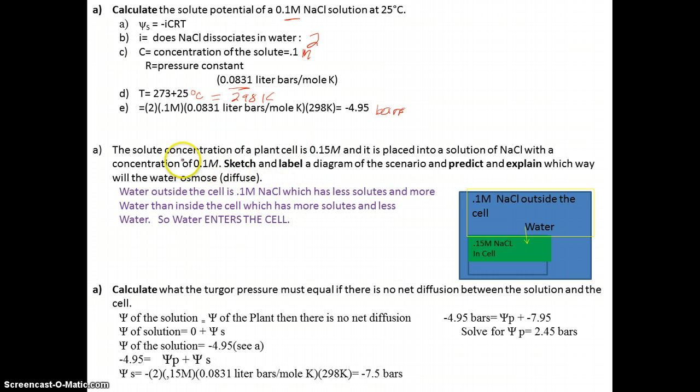The next problem asks: the solute concentration of a plant cell is 0.15, placed in a solution of sodium chloride with 0.1. Sketch and label the diagram and predict which way water will diffuse or osmose. It will go from where there's more water to less water. 0.1 is a lower concentration than 0.15, so you have less solutes outside and more water. Therefore, water will go into the cell.